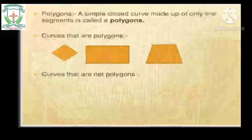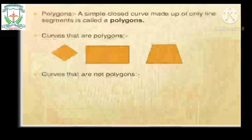If a figure must be a polygon, three rules must be applied. First, it should be a simple curve. Second, it must be a closed curve. Third, it must be made up of only line segments.